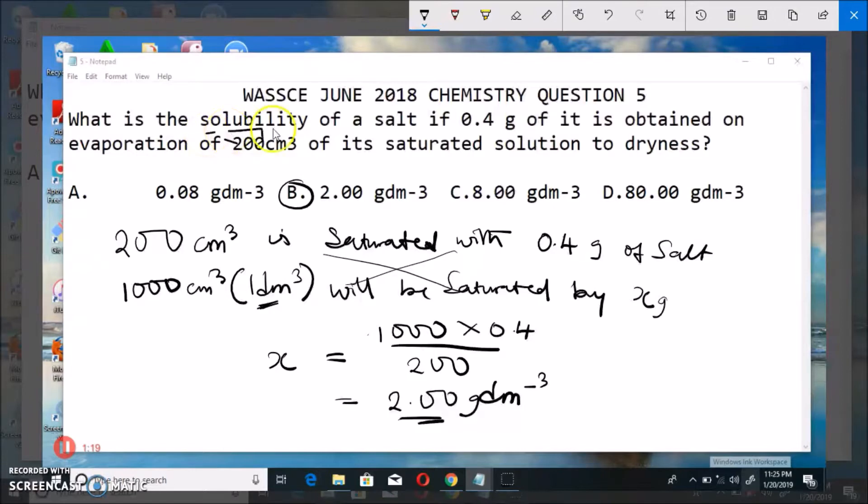So taking into cognizance this definition of solubility, we can do this calculation that since we have 0.4 inside 200, what do we have inside 1000 cm³ or 1 dm³? We actually have 2.0 grams. So since we have 2.0 grams in 1 dm³, we can say that the solubility is 2.00 gram per dm³.